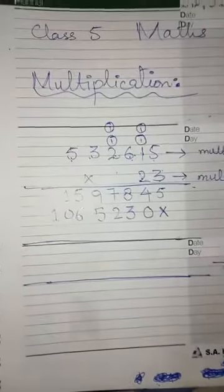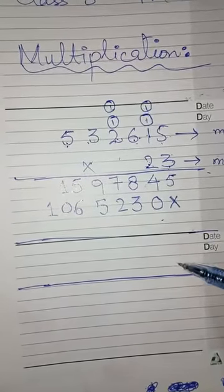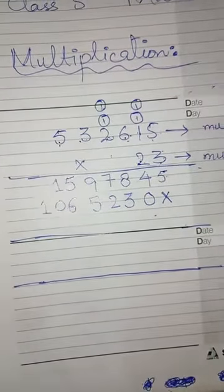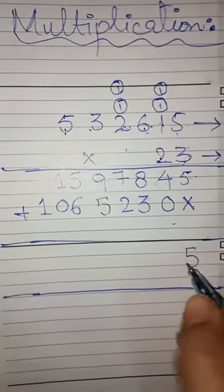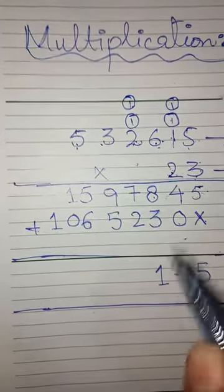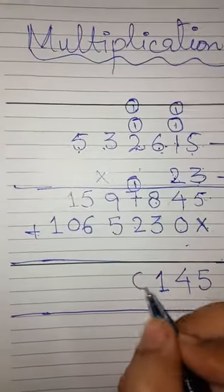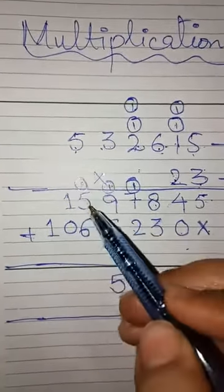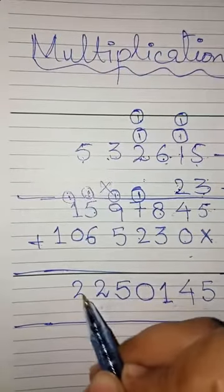Now we have 2 numbers from multiplication. We multiply to get the product. Now we take these 2 numbers and add them. 1 plus 7 is 8. 4 plus 0 is 4. 8 plus 3 is 11. 1 is here and the carry 1 goes to the next position. 7 plus 1 is 8, plus 2 is 10. 0 is here, 1 is carry. 9 plus 1 is 10, plus 5 is 15. 5 is here, 1 is carry. 5 plus 1 is 6, plus 6 is 12. 2 is here, 1 is carry. 1 plus 1 is 2 and 1 is here.